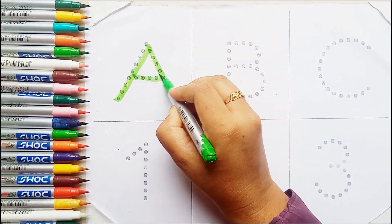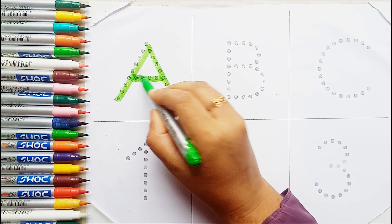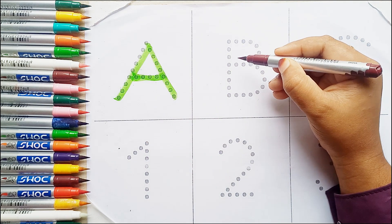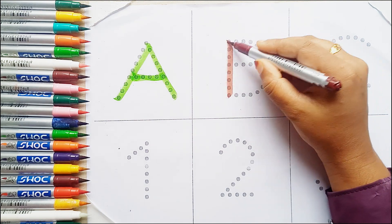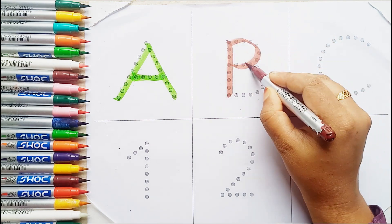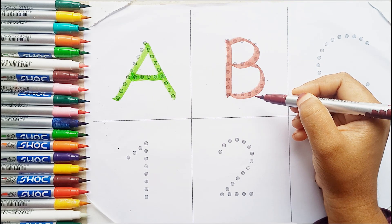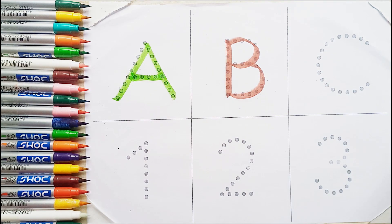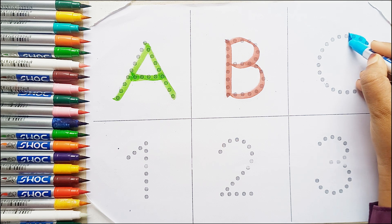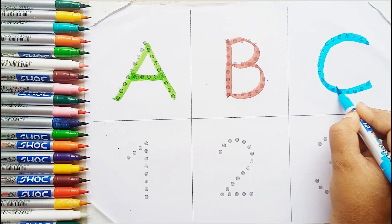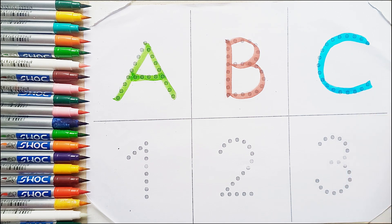A, A for airplane, brown color. B, B for butterfly, sky blue color. C, C for candy, pink color.